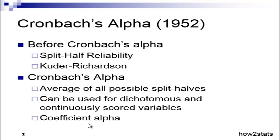About 80% of the time people use the term Cronbach's alpha, and 20% of the time people say coefficient alpha. Both mean the same thing. Ironically, Cronbach himself in a paper after 1952 asked people to use the term coefficient alpha because he didn't think it was right to call it Cronbach's alpha, given the many other papers on reliability before his. But most people still call it Cronbach's alpha, even though Cronbach himself preferred coefficient alpha.